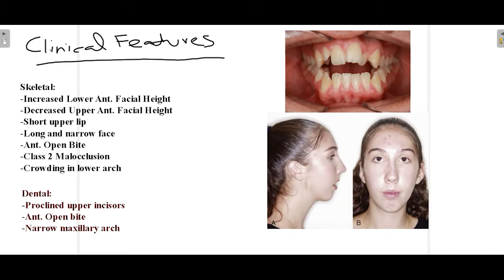There may or may not be crowding in the lower arch. If only a dental anomaly is associated with the OpenBite, we can see clinically that the upper or lower incisors are proclined and the maxillary arch is narrow. This narrowing of the maxillary arch is mainly associated with habits developed by young children — such as thumb sucking and tongue thrusting — that lead to OpenBite.